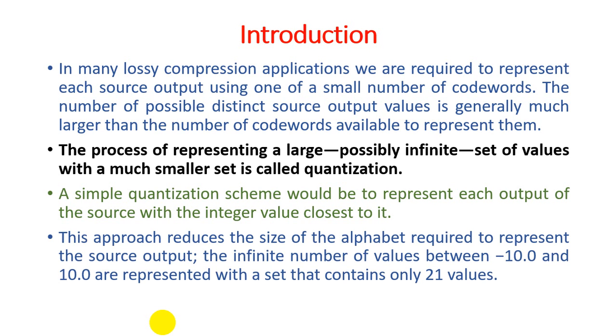If you have ten numbers and you need to store all unique values, you need ten different records. But you can find one unique number that can easily identify those ten numbers. The infinite number of values between minus ten to plus ten are represented with a set that contains only twenty-one values. But obviously, minus ten to plus ten includes zero, so twenty-one values need to be stored.